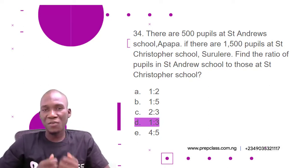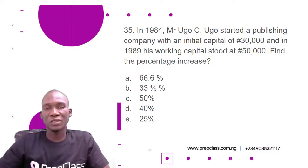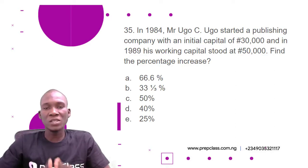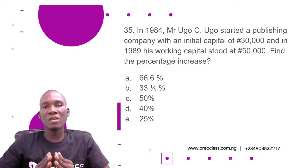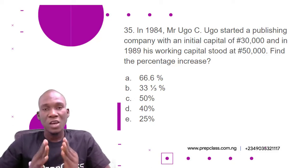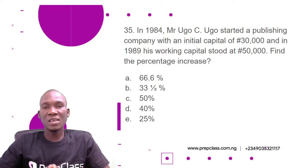The last question, number 35: Mr. Ugo Sigo started a publishing company with an initial capital of 30,000 naira, and in 1989 his working capital stood at 50,000 naira. Find the percentage increase. Options: A) 66.6%, B) 33⅓%, C) 50%, D) 40%, E) 25%.